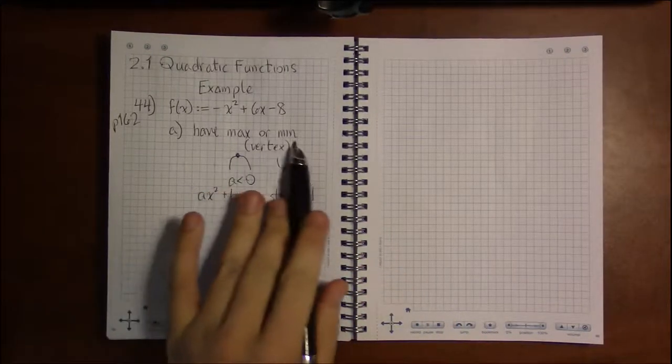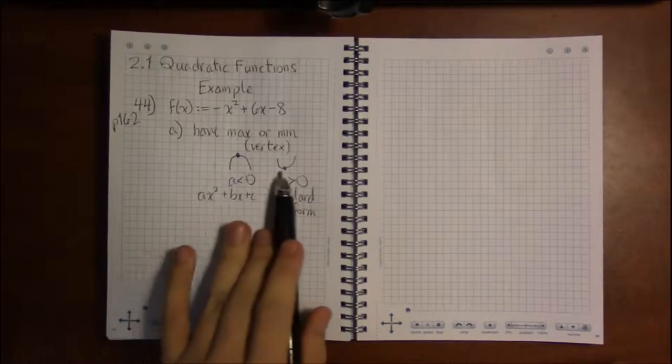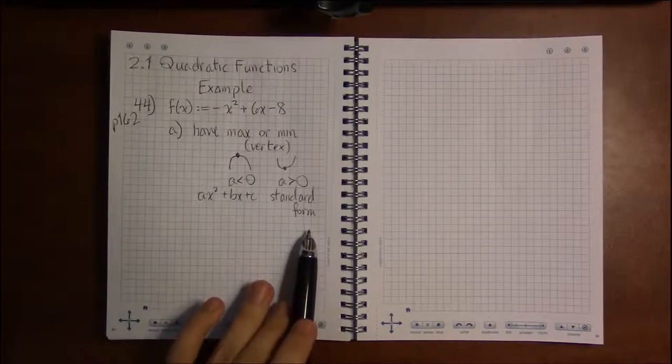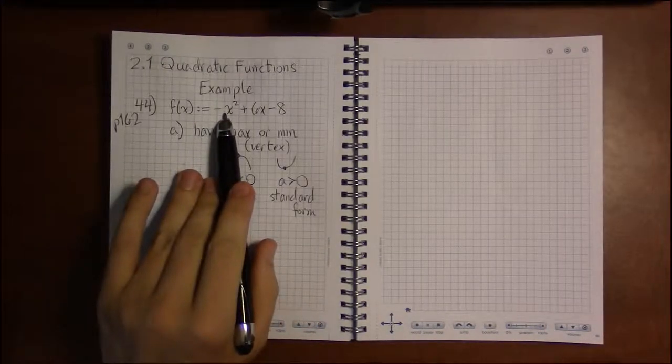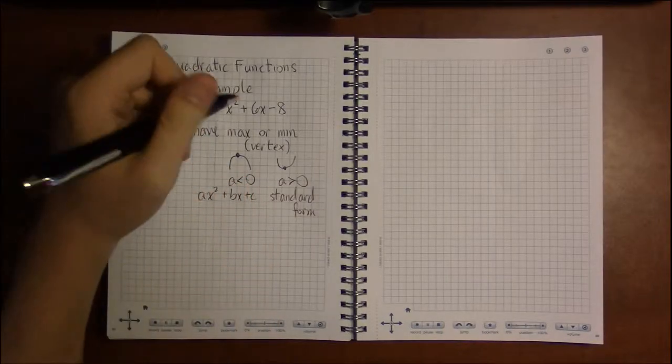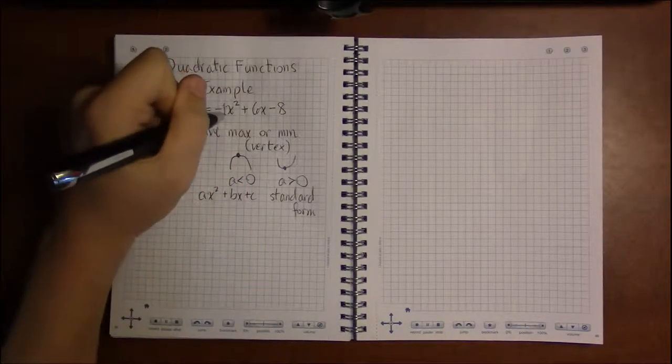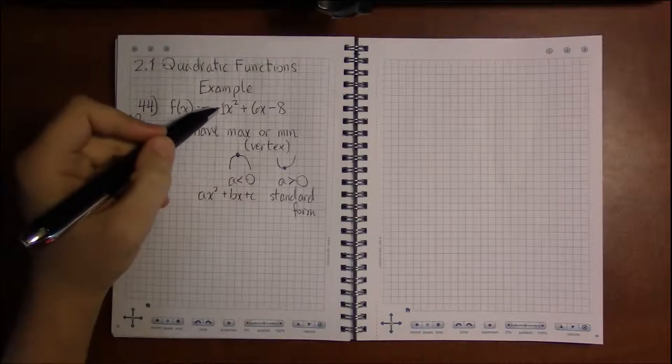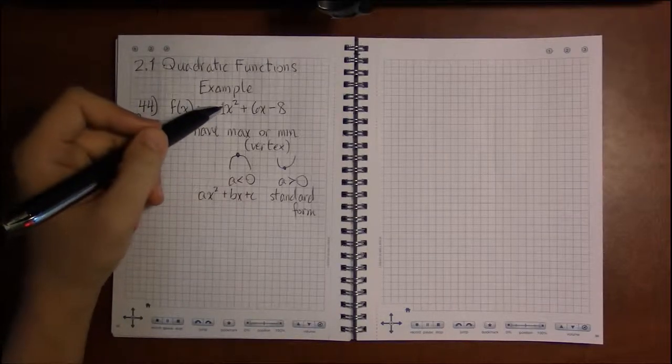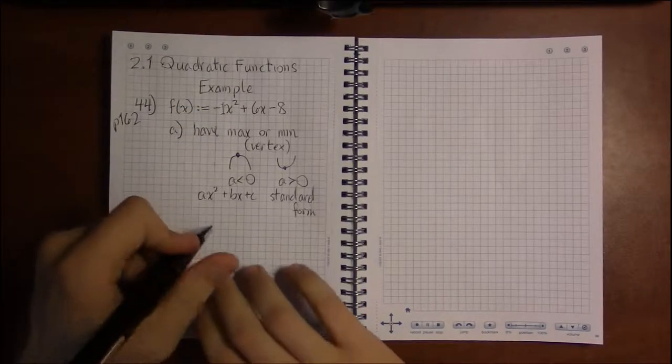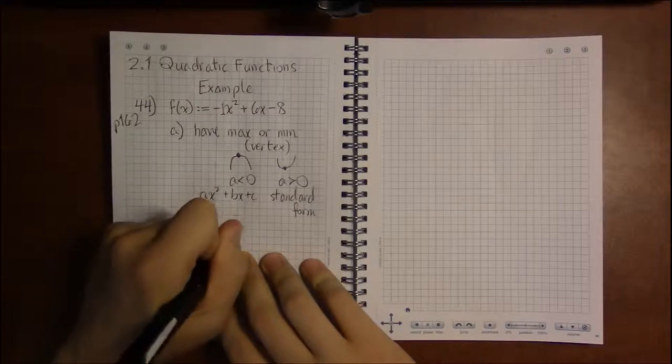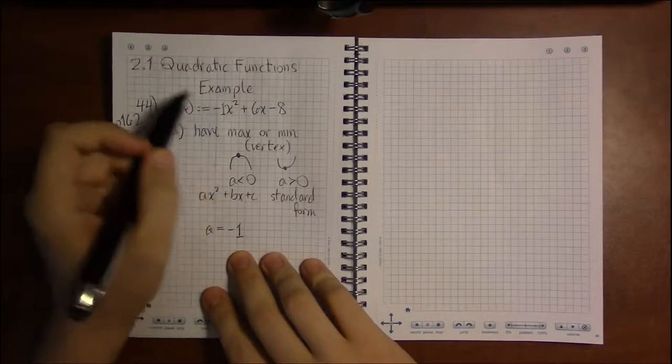So determining whether it has a max or min is the same thing as determining whether the parabola opens up or opens down. If we look for our a, we don't see a number, we see a negative sign. If you put a one right in front of the x, you're going to see that minus one is our value for a.